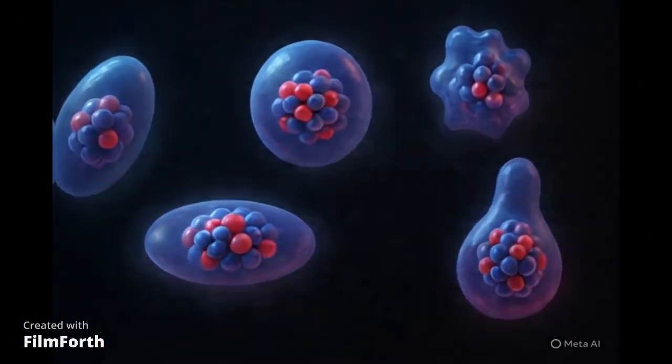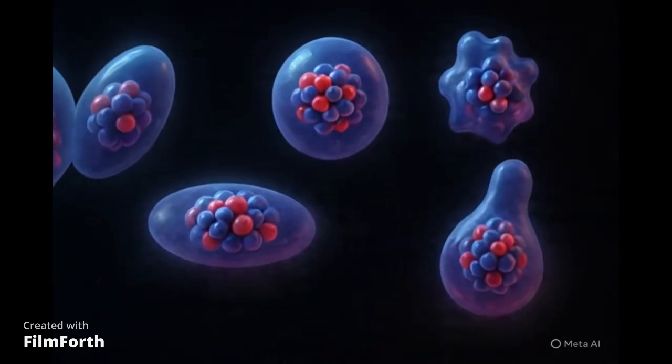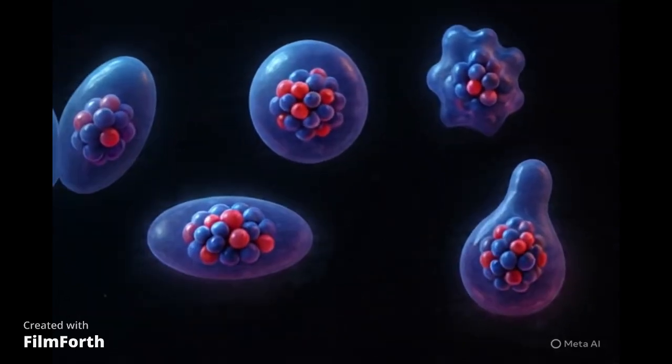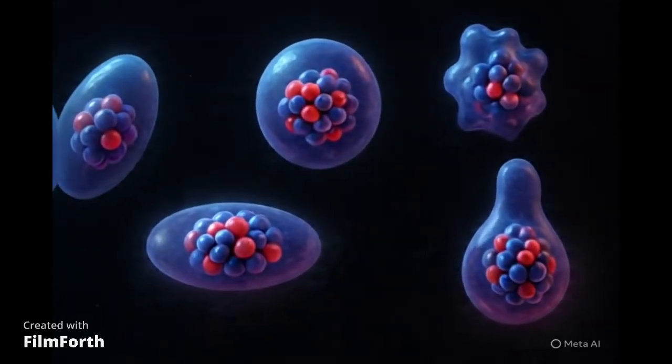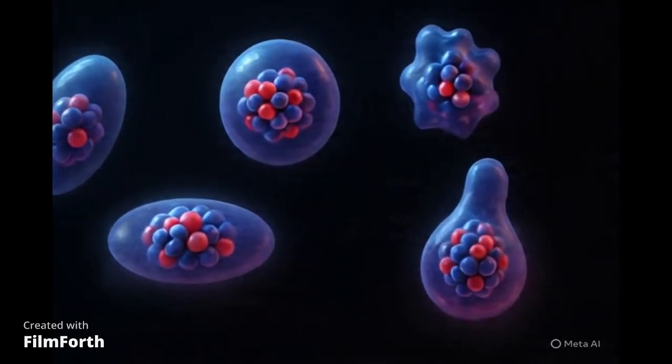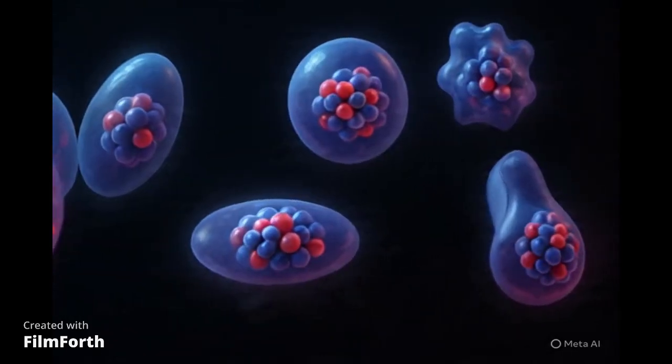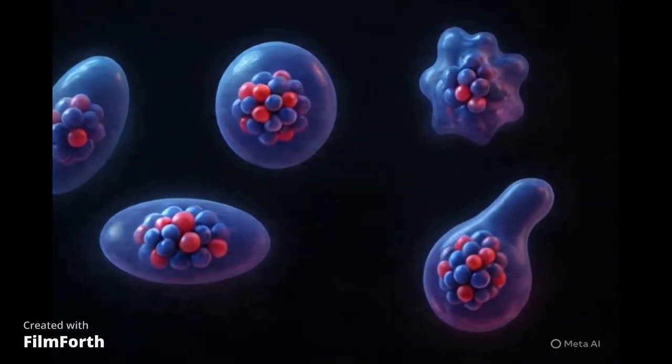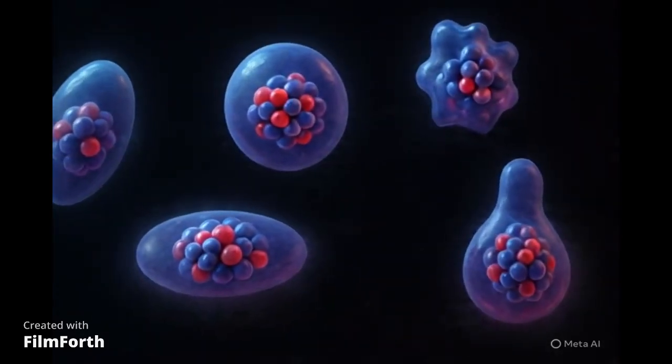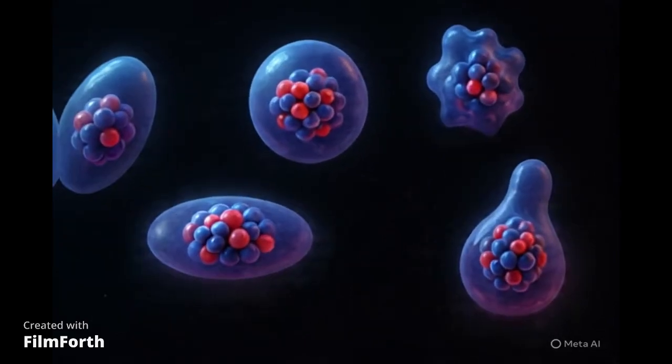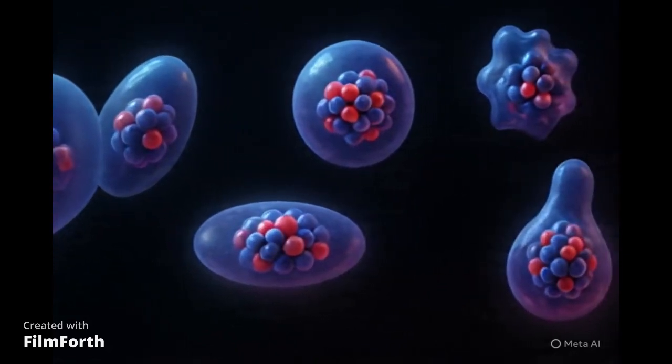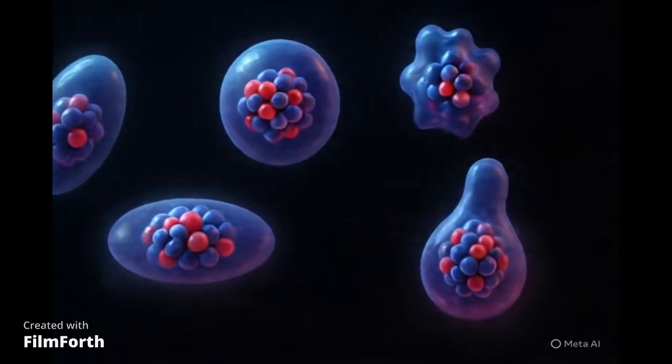So what dictates these fascinating variations in nuclear shape? Well, it's a delicate dance of forces and the arrangement of the nucleus's building blocks, the protons and neutrons, collectively known as nucleons. The strong nuclear force acts like a superglue, binding these nucleons together, while the electromagnetic force pushes the positively charged protons apart. The interplay of these opposing forces can lead to these beautiful deformations from a perfect sphere.